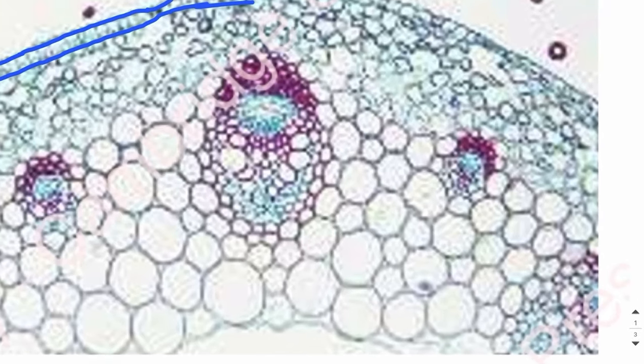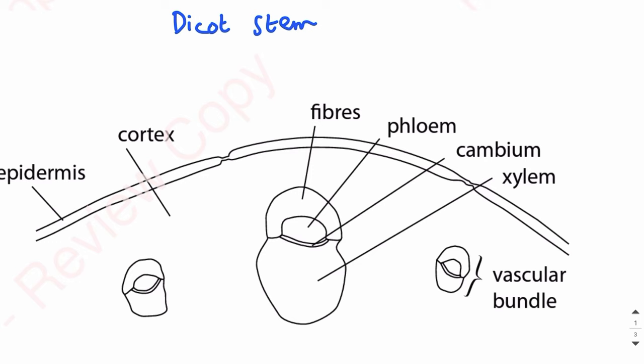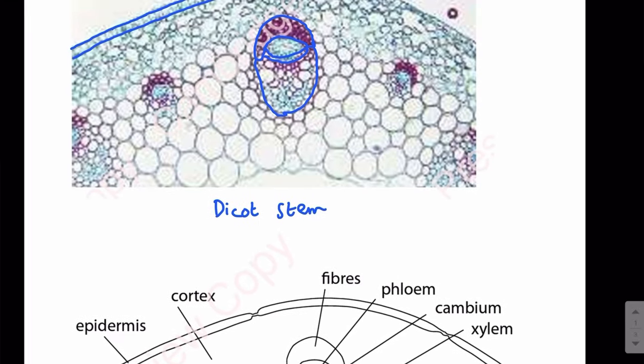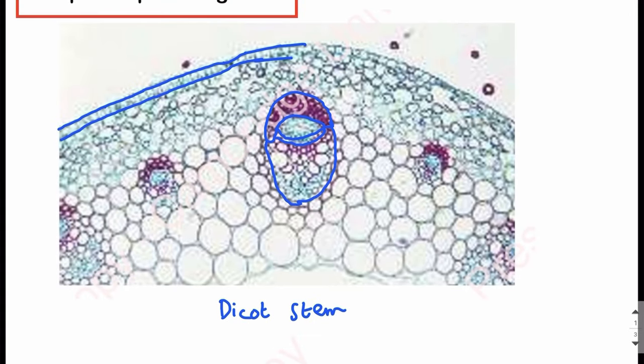We can see the vascular bundles which contain tissues. This tissue is sclerenchyma, and over here there is a small layer of cells which is the vascular cambium, and then the entire tissue is the xylem. So in this outline drawing, the top layer is fibers or sclerenchyma, then phloem, then vascular cambium, then xylem. The tissue you see spanning the mid-region is the cortex of the stem.